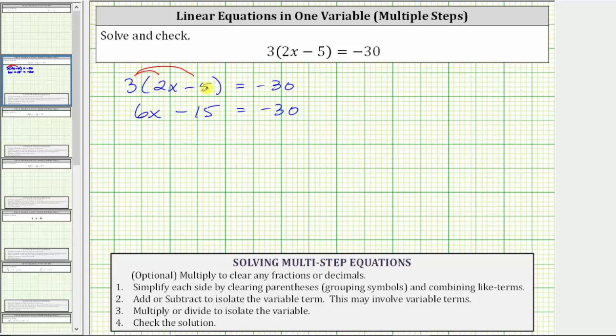If you're wondering why the minus five was treated as negative five, remember subtracting positive five is equivalent to adding negative five, which means the given equation is equivalent to the equation three times the quantity two x plus negative five equals negative 30.